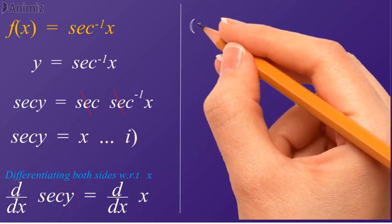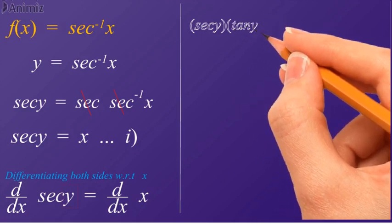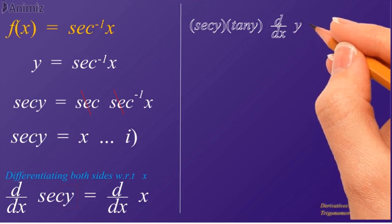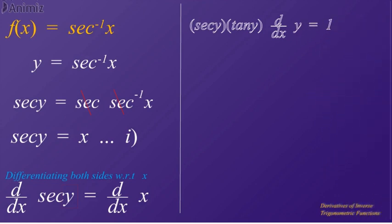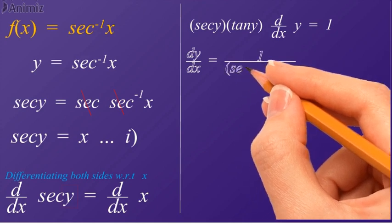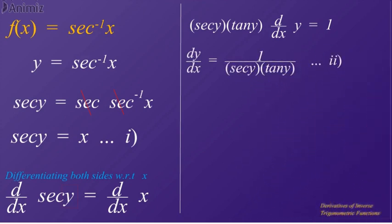Therefore, writing secant y into tangent y — which is the derivative of secant with respect to x — and d/dx of y, which is the derivative of y with respect to x, and is equal to 1, which is the derivative of x with respect to x. Now divide both sides by secant y times tangent y — or we can say that as tangent y and secant y are in multiplication with dy/dx, they will be in division when shifted to the right-hand side.